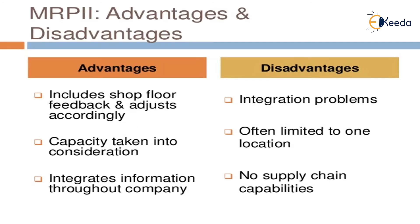Coming to the pros and cons, the advantages are that it includes shop floor feedback and adjusts accordingly, capacity is taken into consideration, and it disseminates information throughout the company. The processing of all materials required for manufacturing can be done properly under MRP2.